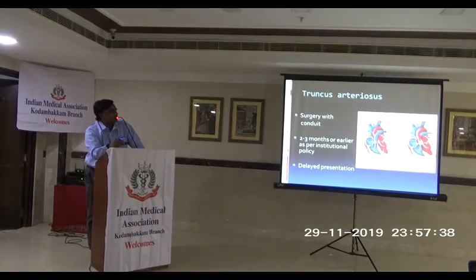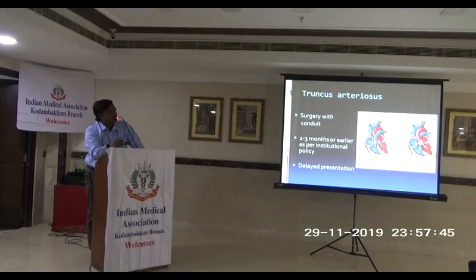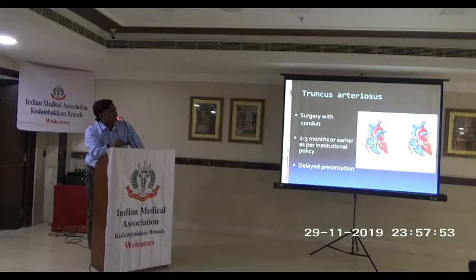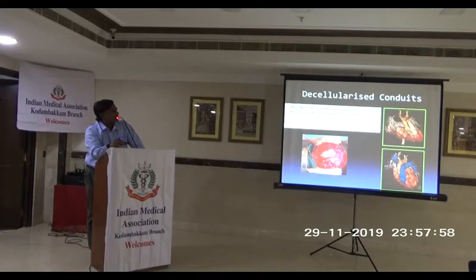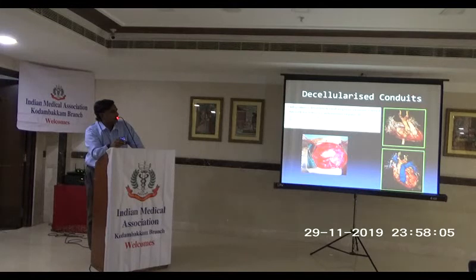Truncus arteriosus is where instead of a separate RV-to-PA and LV-to-aorta, you have a single truncal artery that overrides the VSD and then gives rise to the pulmonary artery. Here we detach the pulmonary artery, close the VSD, and put an RV-to-PA conduit. This shows the conduit in truncus arteriosus where we have connected the RV to the pulmonary artery using a conduit.